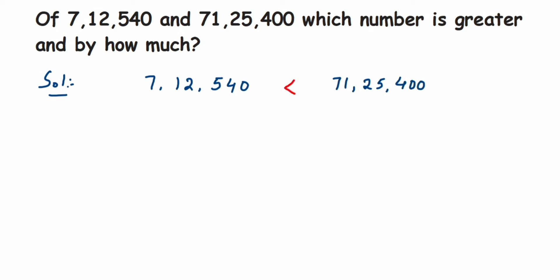Now they are asking by how much, which means how much is the second number greater than the first one. To find that out, we have to subtract these two numbers. Let me write down the numbers. Since the first number is smaller, I'm going to write down the bigger number first, so it's 71,25,400.